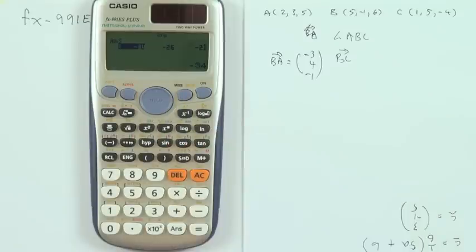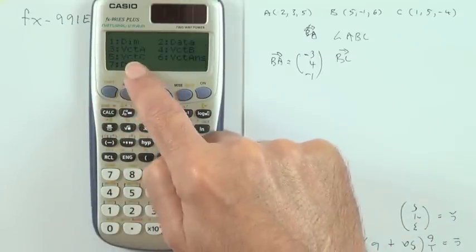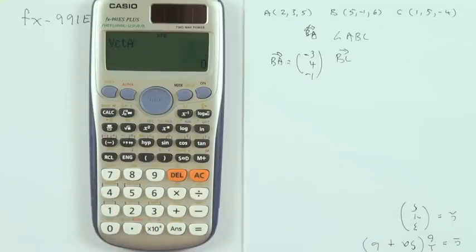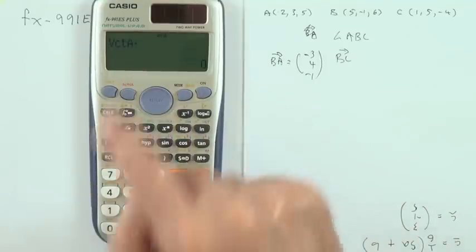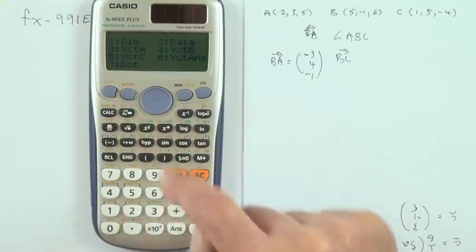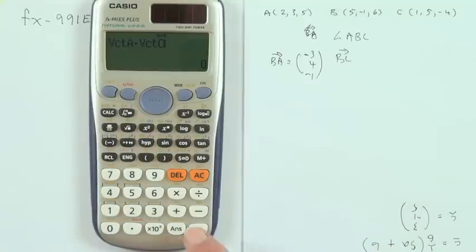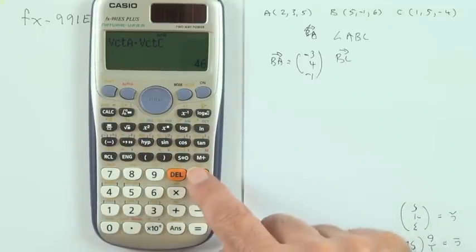Dot products within that, if I want the dot product of them, I would just say shift vector, call out A, that was 3, shift vector, number 7 says dot and it puts the dot in, shift vector, call out C, that was number 5. There's the dot product, press equals, and what does it come to: 46, dot product, scalar product.